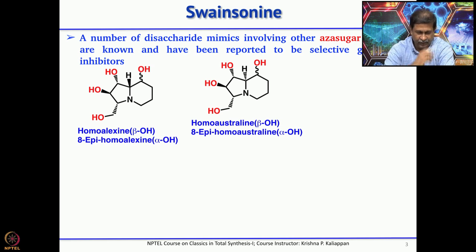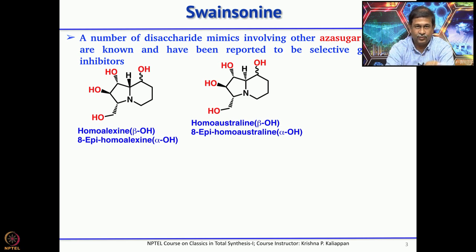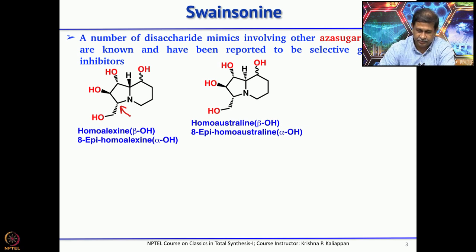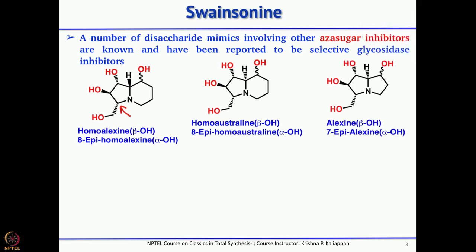This is homoalexin, and if you compare it with swainsonine you can see there is an additional CH₂OH group. Also, the stereochemistry of the hydroxyl group varies. In maloxin you have a 5-membered ring coupled with another 5-membered ring, whereas in these two cases you have a pyrrolizidine ring coupled with a 6-membered ring.